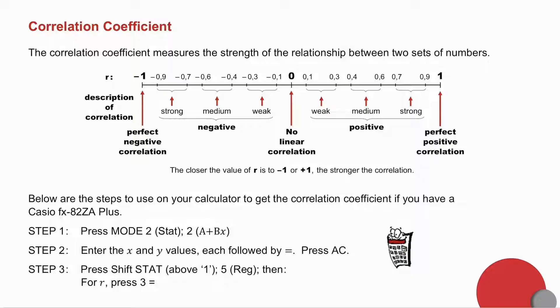From 0.1 to 0.3, we talk about a weak correlation. From 0.4 to 0.6, medium. And from 0.7 to 0.9, strong. And exactly the same on the negative side.